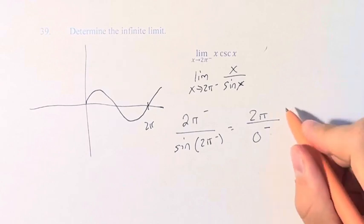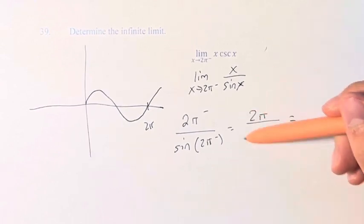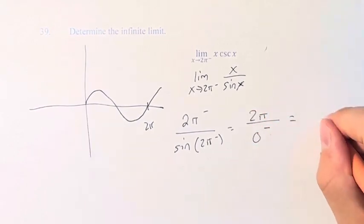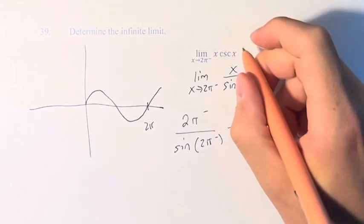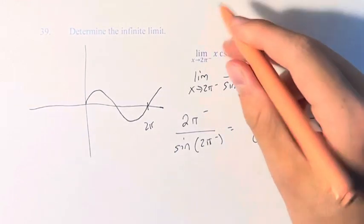Any number divided by 0 is undefined, but if you're dividing by numbers approaching 0, it's infinity. And since it's a positive number divided by a negative number, it's negative infinity. And that is the value of the limit.